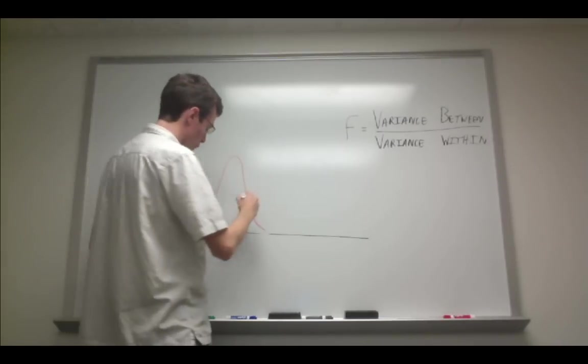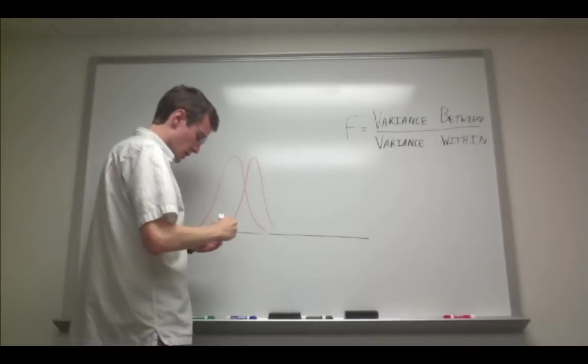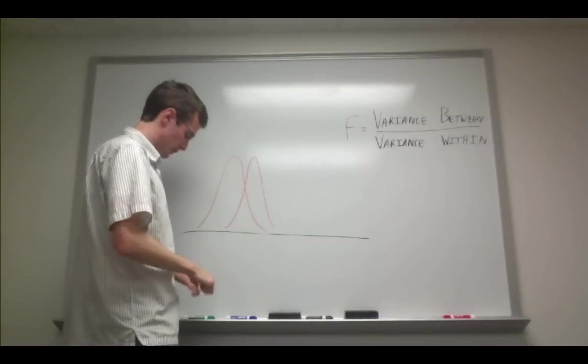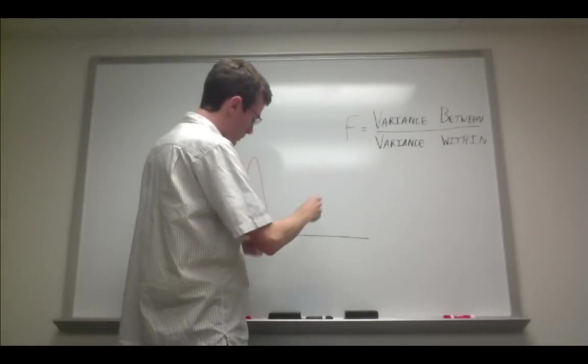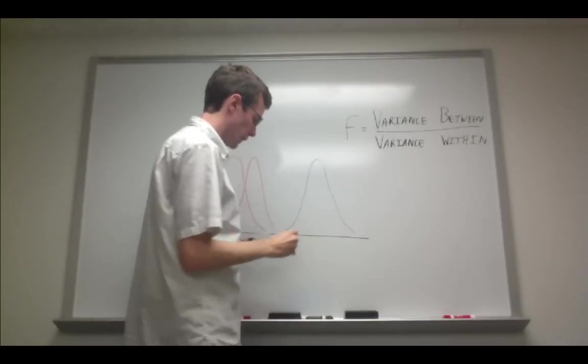In red, this is another group and its distribution is relatively close to the mean of the orange distribution. Lastly, let's say that way out here I have a group in blue and it looks like that.